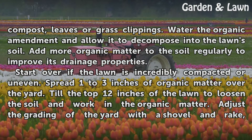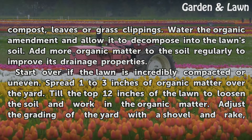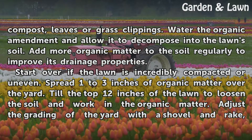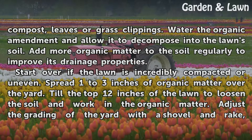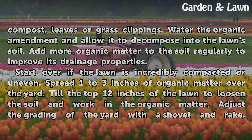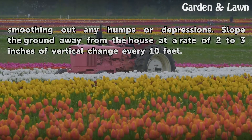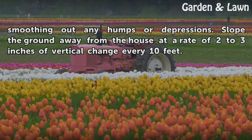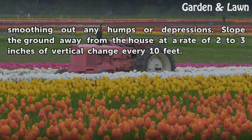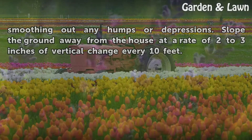Start over if the lawn is incredibly compacted or uneven. Spread 1 to 3 inches of organic matter over the yard. Till the top 12 inches of the lawn to loosen the soil and work in the organic matter. Adjust the grading of the yard with a shovel and rake, smoothing out any humps or depressions. Slope the ground away from the house at a rate of 2 to 3 inches of vertical change every 10 feet.